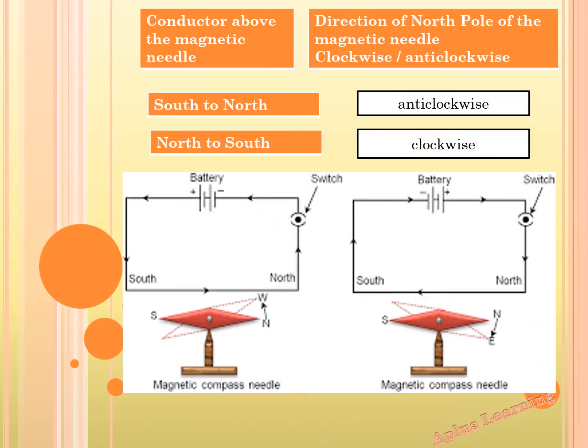A magnetic field is developed around a current-carrying conductor. The deflection of the magnetic needle is a result of the mutual action of this magnetic field and that of the magnetic needle.